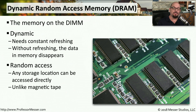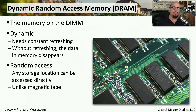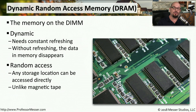The use of the word 'random' in dynamic random access memory is because we can access anything in that memory at any place, at any time. This is very different than how we used to access information on a magnetic tape, where you'd have to wind through the tape to get to the section you needed to read. With dynamic RAM, you can simply specify an address, grab that information, and then access that data.